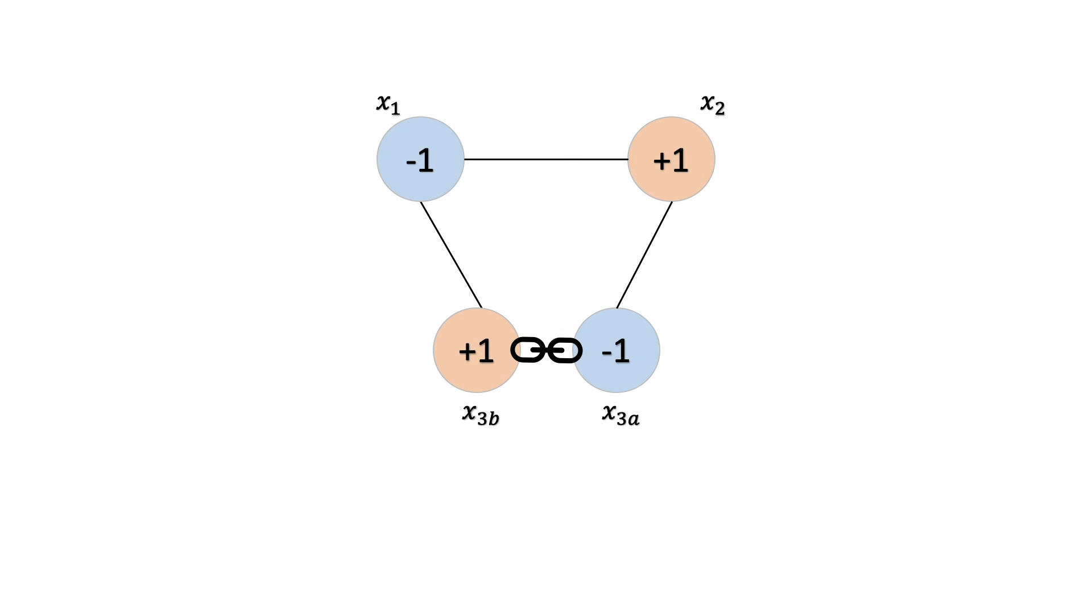When this problem runs on the QPU, we might get back a solution that looks like this. In this solution, we're seeing that our qubits 2 and 3b returned a value of positive 1, and qubits 1 and 3a returned a value of negative 1. But remember that qubits 3a and 3b are chained together, which means that they represent one logical variable. For our solution to make sense, they need to have the same value. As a user, we can control how strong that chain is using the chain strength parameter in our programs. If our results return from the QPU with a broken chain like this, our software tools will work to resolve the problem, and choose one of the values for your logical variable.